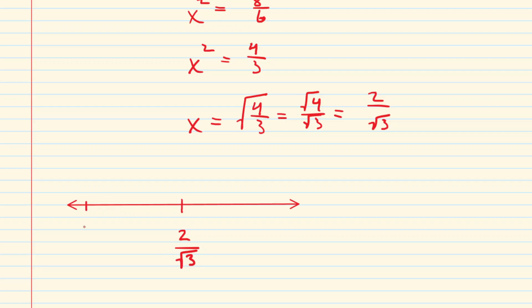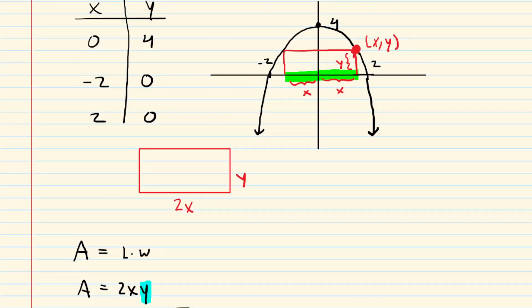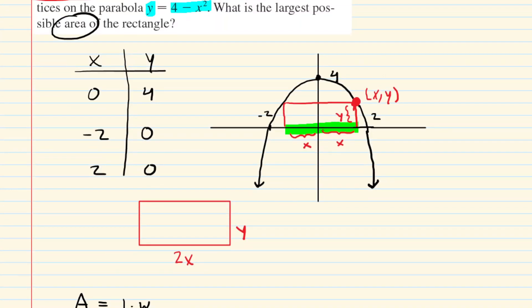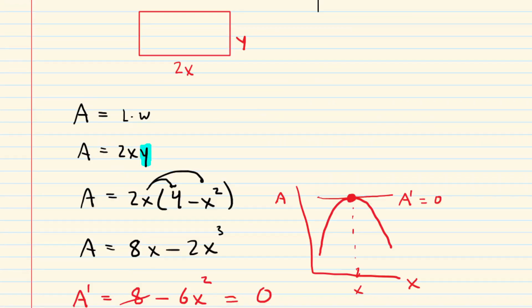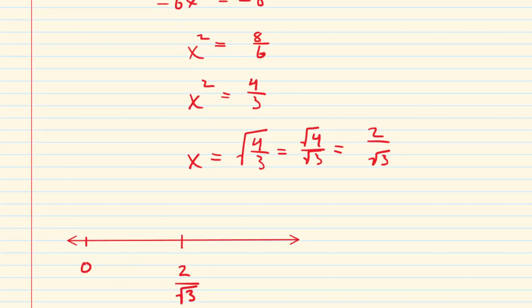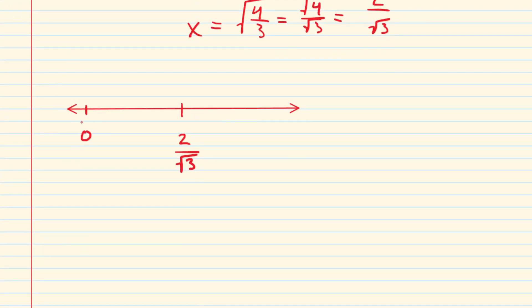We know that x has to be greater than 0 because if you look at the original diagram, the rectangle has some positive dimension measured from the origin. I mean, if x was 0, you wouldn't even have a rectangle basically. So x has to be larger than 0. That gives the rectangle an adequate positive length.